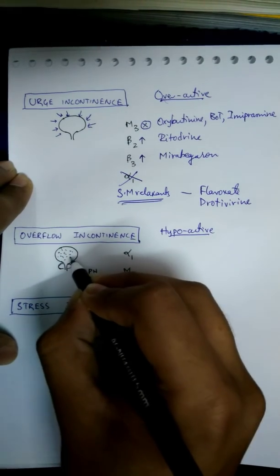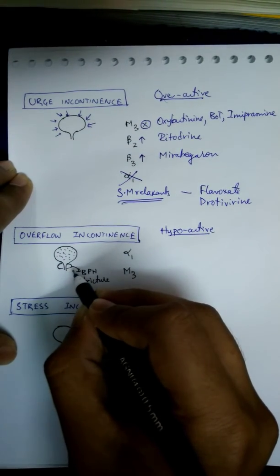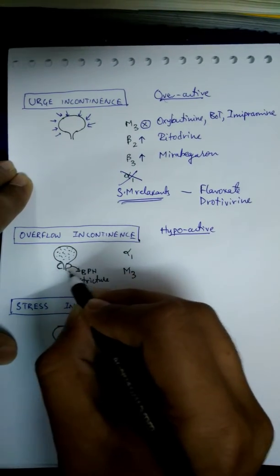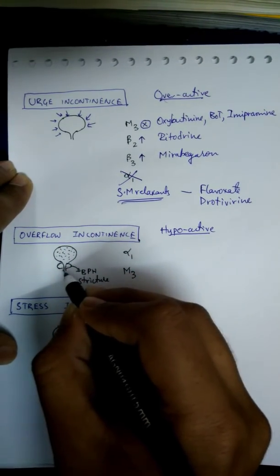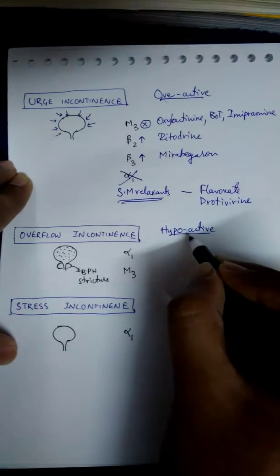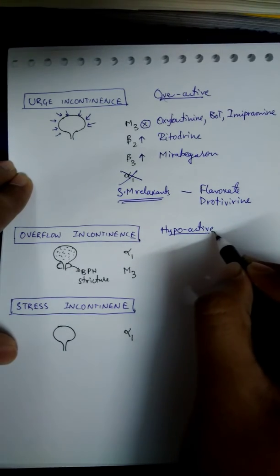Urine keeps filling in the bladder and the bladder is unable to overcome the pressure and obstruction at the sphincter level. Its contraction is insufficient - that's why the bladder is called hypoactive bladder.